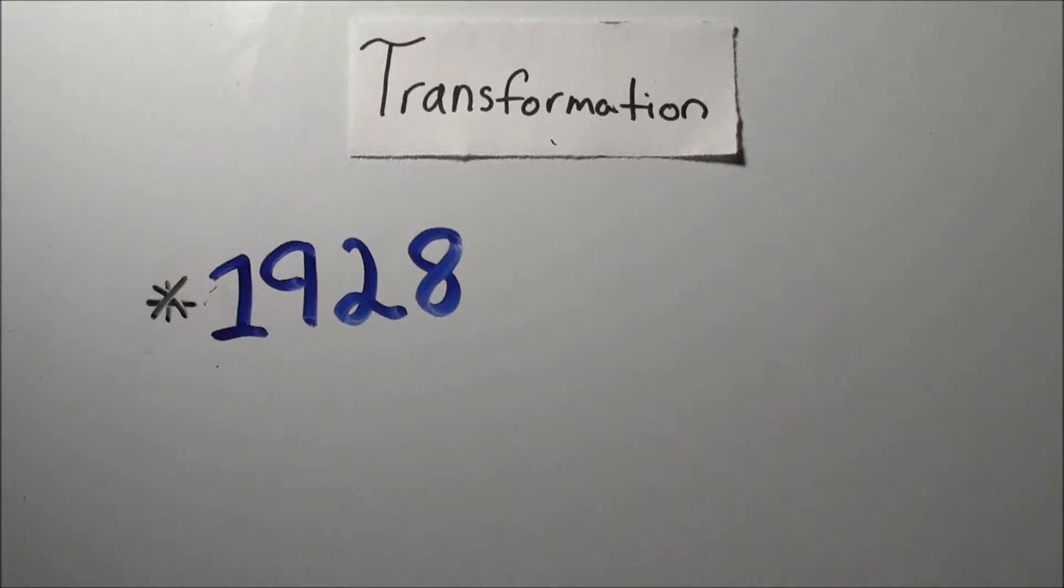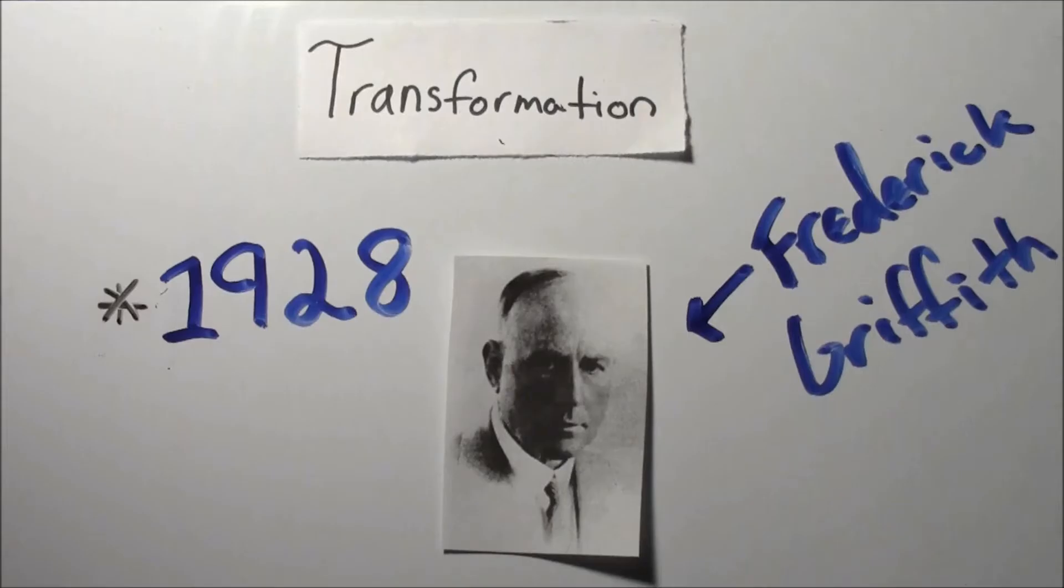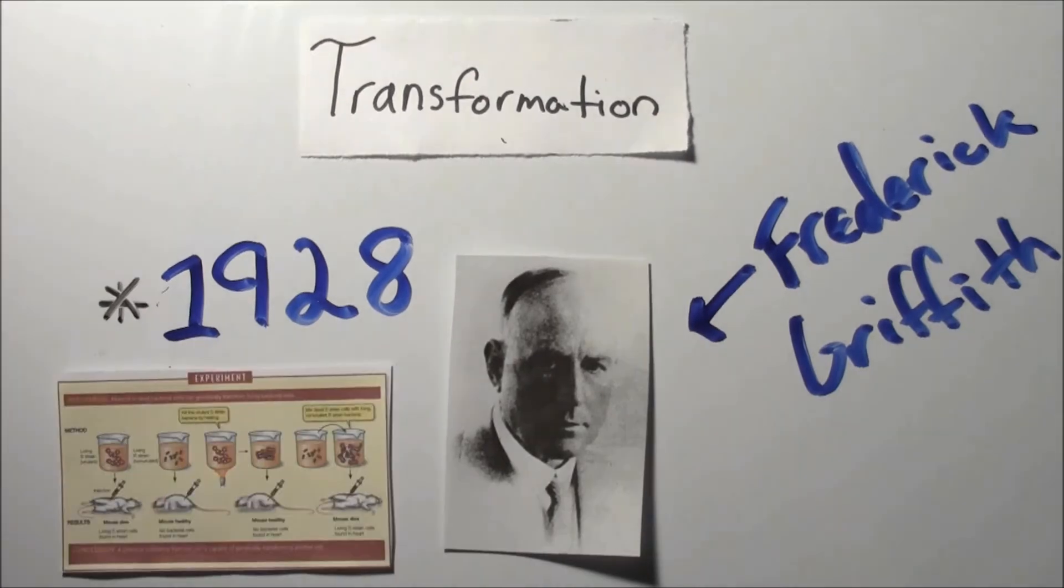Before we go into anything, let's talk about where the idea of transformation first started. It was demonstrated in 1928 by a British bacteriologist named Frederick Griffith. In his experiment, he discovered that a harmless strain of Streptococcus pneumoniae could be made virulent after being exposed to heat-killed virulent strains.